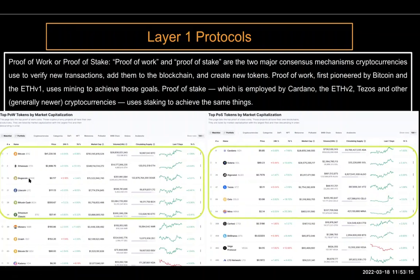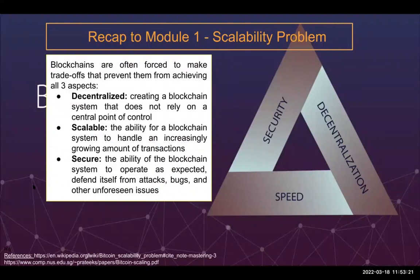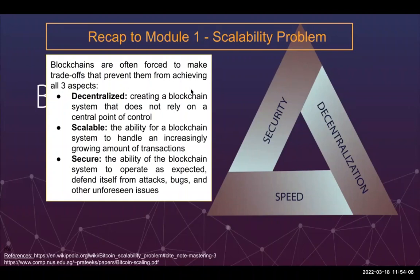This is the scalability problem we were talking about — the trilemma. If a blockchain company wants to be super secure, super fast, and super decentralized, that's a tough thing to do. Some companies like Solana and Avalanche focus on speed. Proof of work protocols like Bitcoin focus on decentralization. Some focus on security. Decentralization means creating a blockchain system that doesn't rely on a central point of control, and scalability means handling as many transactions per second as possible.